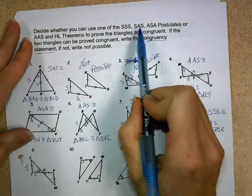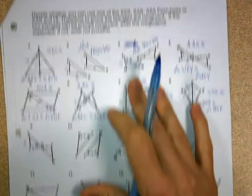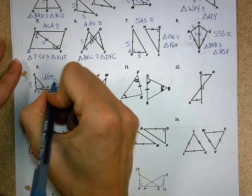If I look up here at my choices, the angle has to either be between, or I have to have two angles. Well, I only have one, and it's not included between my two sides, so this one is not possible.